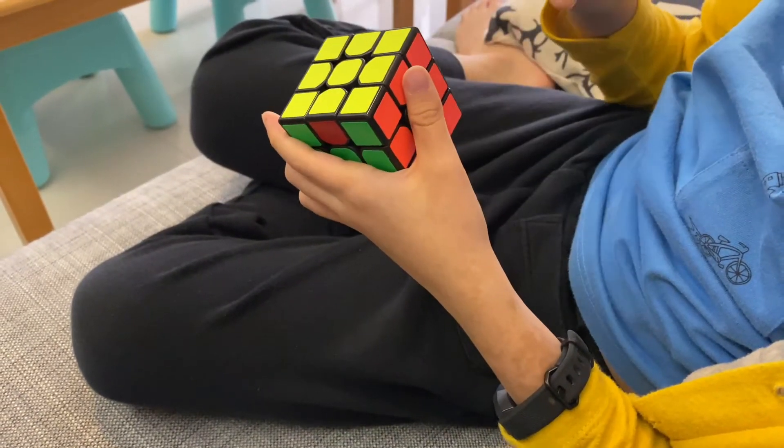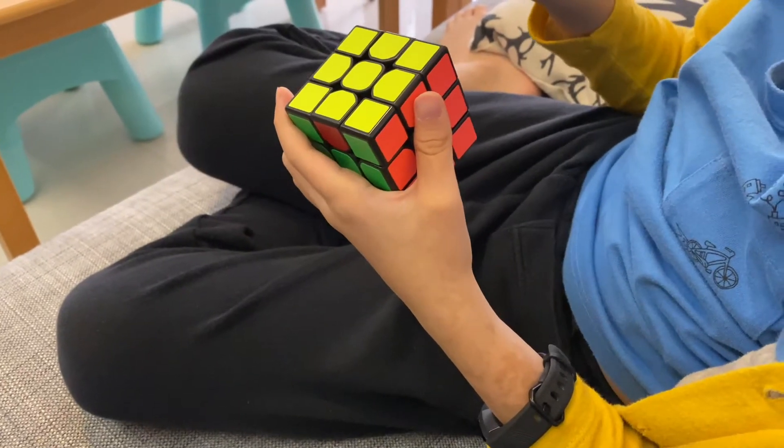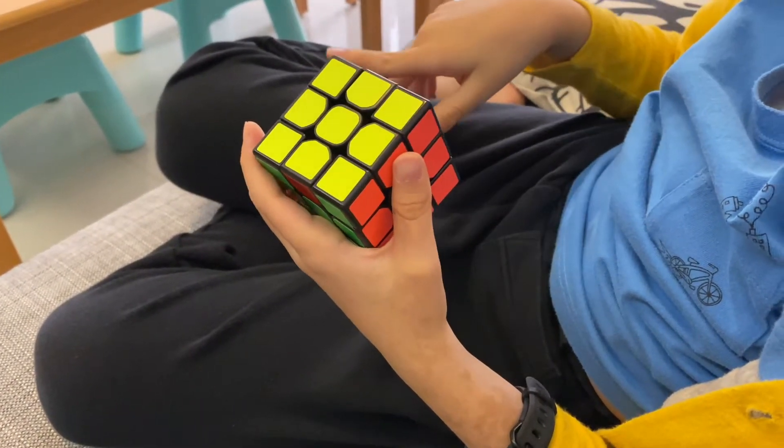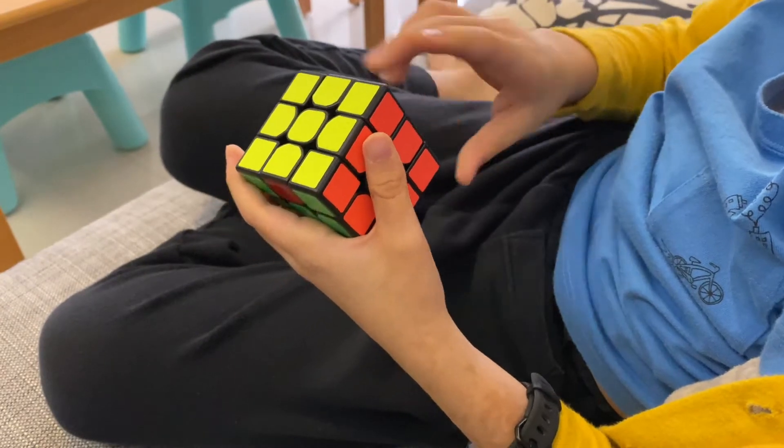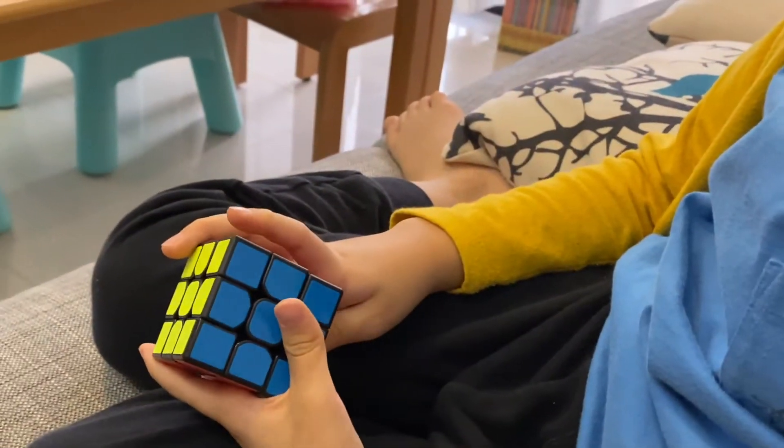You have to do the right-hand algorithm one time and do the left one time, and then do the right five times and do the left five times. Now, let's do it. Now, we have to do the algorithm.